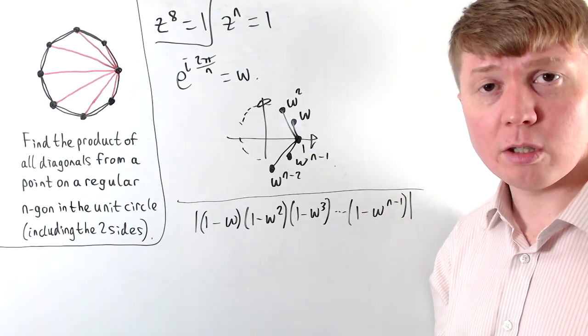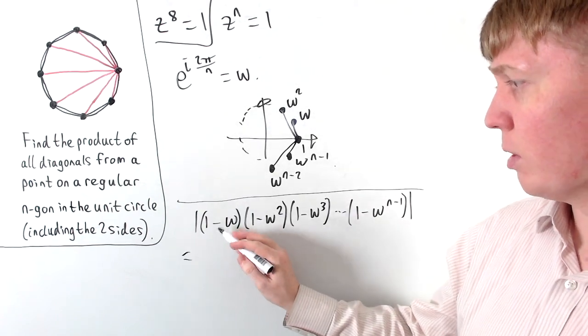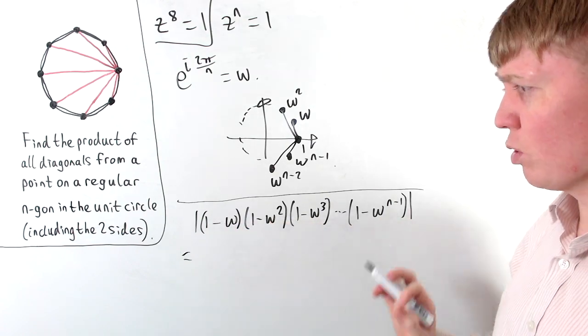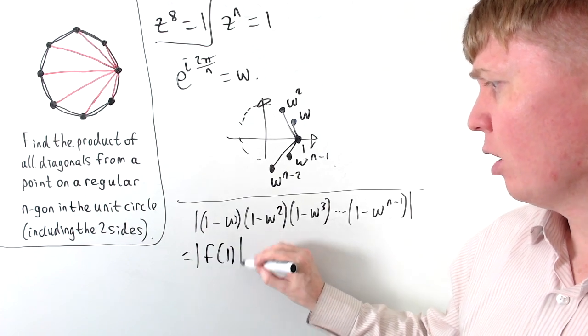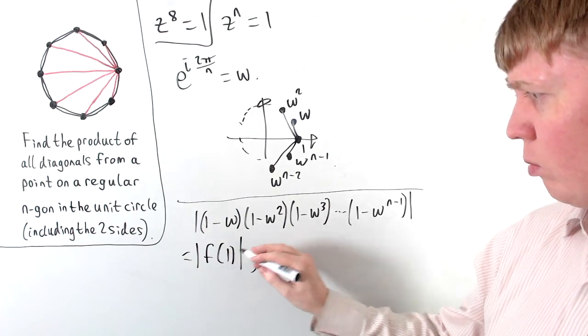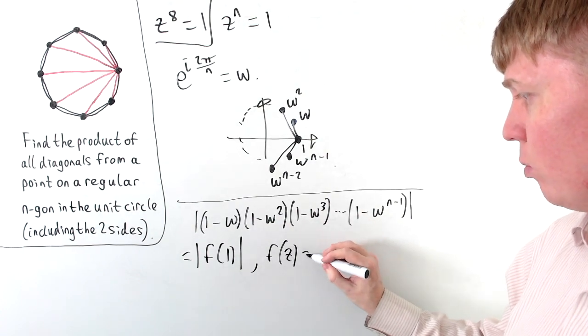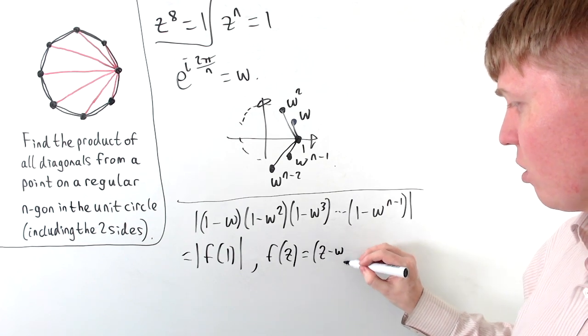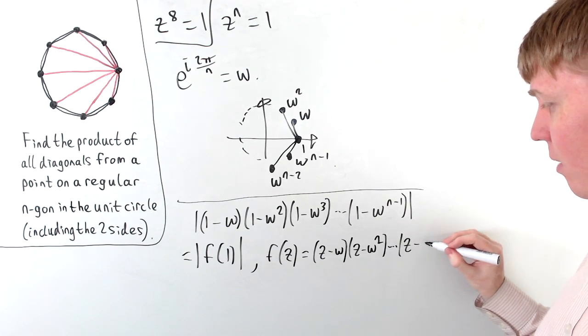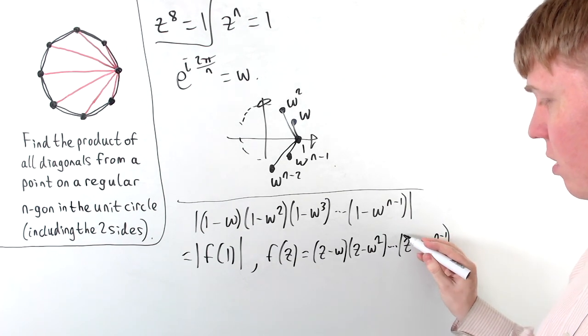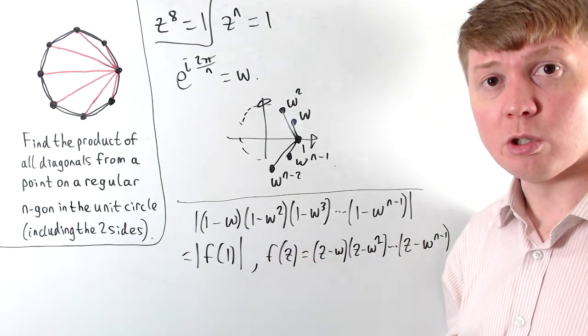So now the solution to this problem relies on thinking of this product as essentially being a function evaluated at z equals 1 here. So we can think of this as being the modulus of f of 1, where, let's think, what would this function actually be if it's evaluated at 1, where we would have f of z would be equal to z minus omega times z minus omega squared, and so on, up to z minus omega to the n minus 1. So this is just introducing a function now which is going to help us towards finding this product.